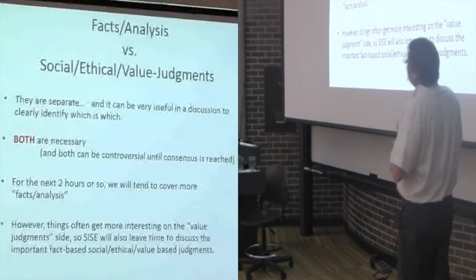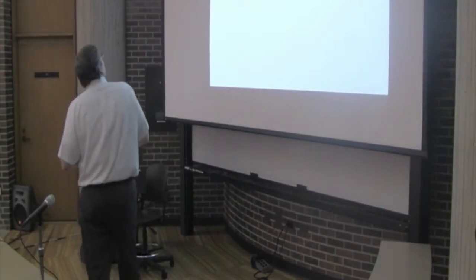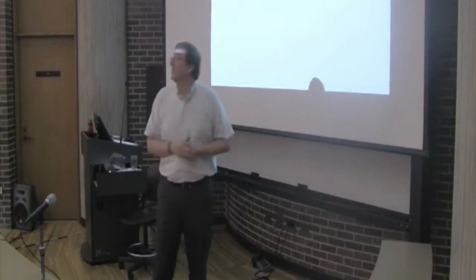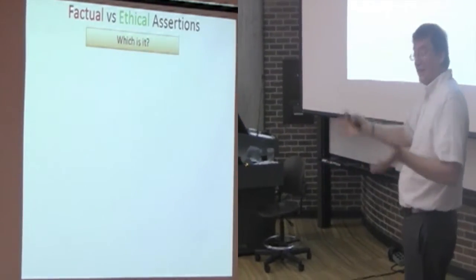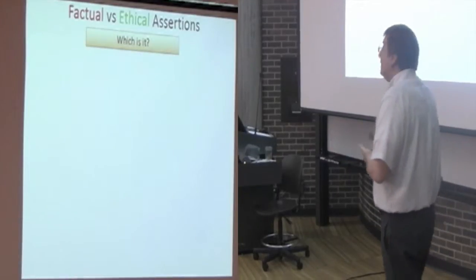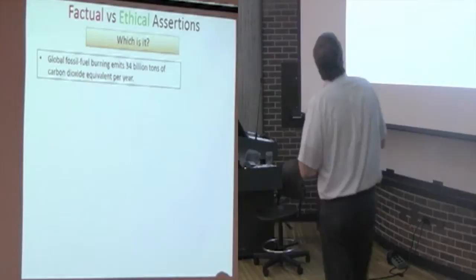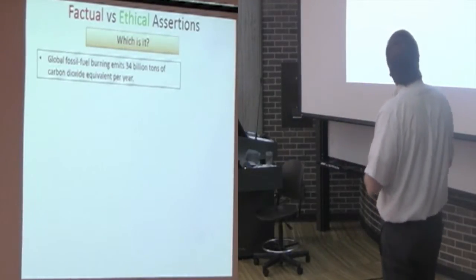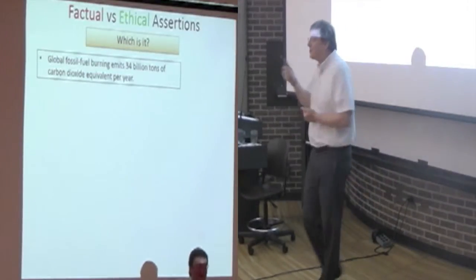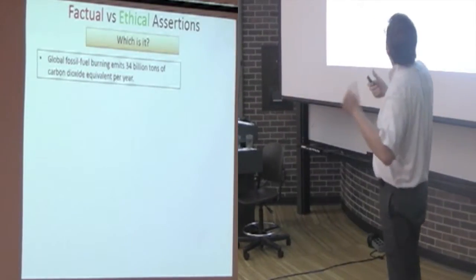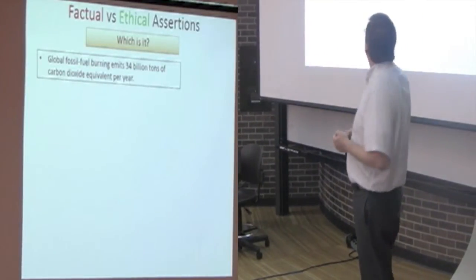Okay, so with this in mind, let's just start off. Let's do a factual versus ethical assertion question and see if we can agree on various things I'm going to say, and see if there's a consensus from all of you as to which side or type of question is likely for each statement. Here's a statement: Global fossil fuel burning emits 34 billion tons of carbon dioxide equivalent per year. Is this a factual assertion that could be proven, or is it a more ethical assertion? Factual? Factual? I would agree.